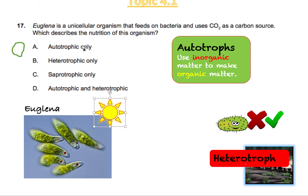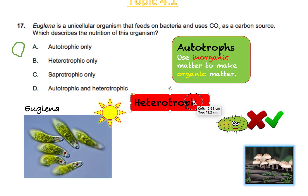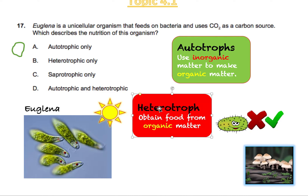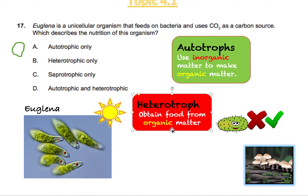Could euglena also be something else? Let's look at option B — heterotrophic. If you break apart the word: autotroph means self-feeding, meaning plants can feed themselves using sunlight and don't need to eat something else to survive. Plants don't have a mouth because they don't need to eat anything else like humans do. Heterotroph, on the other hand, refers to feeding by eating something else — that's basically what humans do.